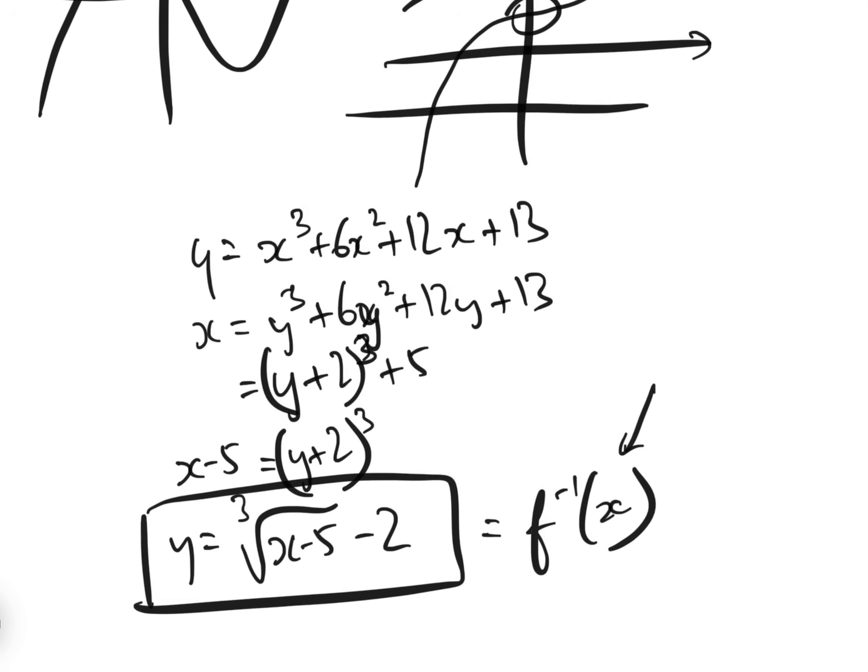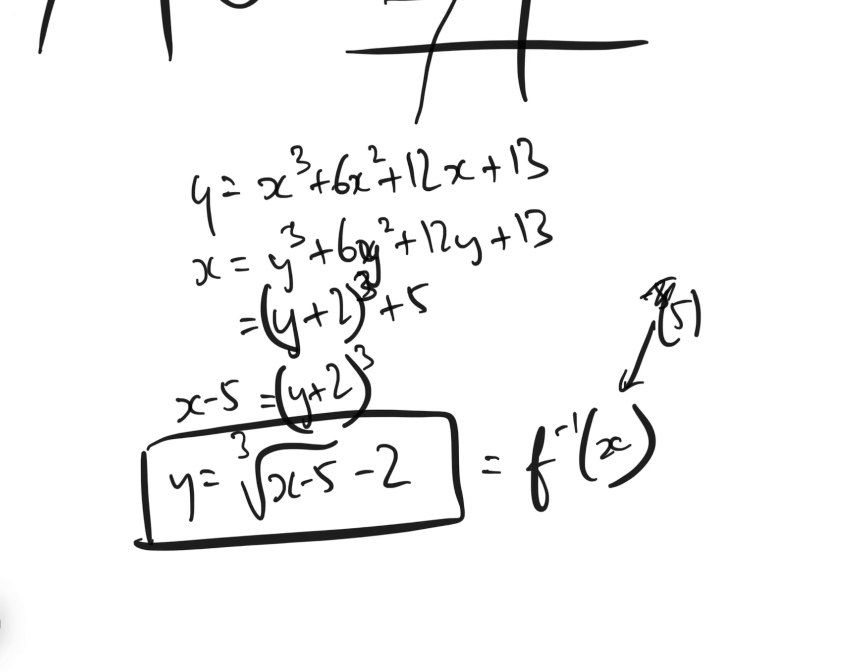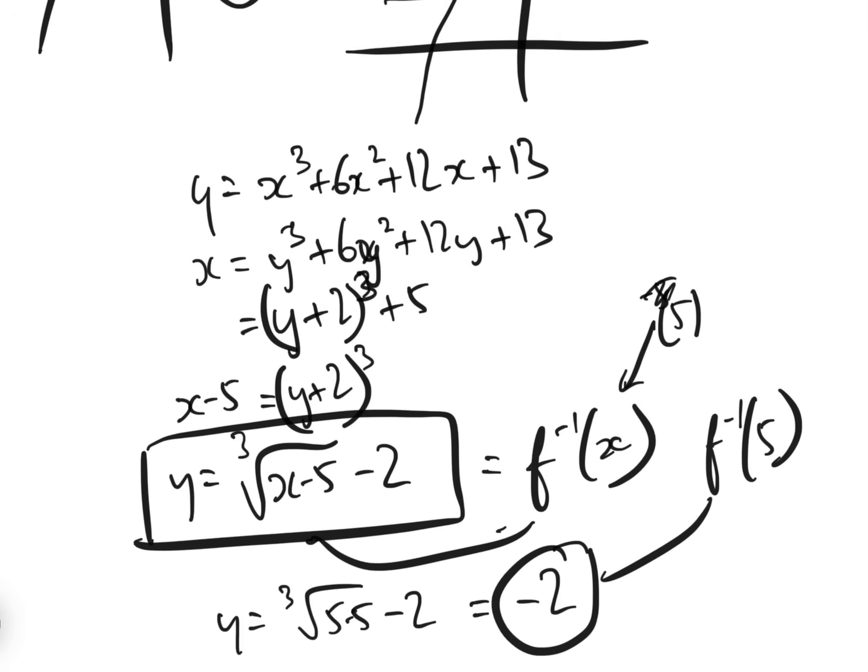And if we then put 5 in there, which is what the question asks, f inverse of 5 here, if we then put 5 in there, we will find that y equals the cube root of (5 minus 5) minus 2, which equals minus 2. So we can actually find the answer, f inverse of 5, which is minus 2, by working out the inverse, which is here.